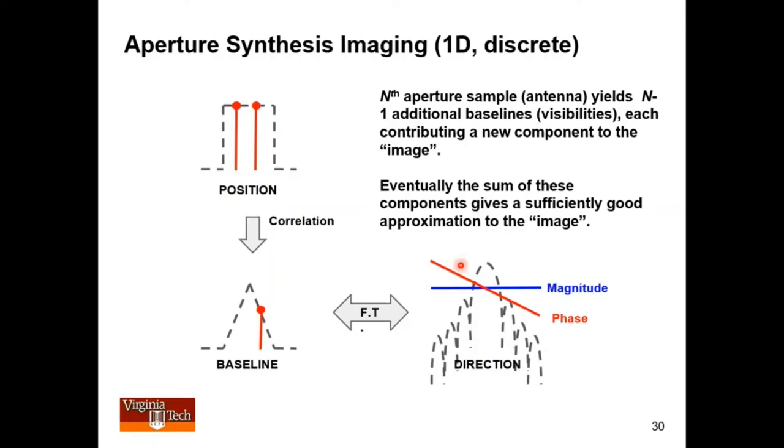So what aperture synthesis imaging is, and here's my 1D version of it, is you have, for example, two element interferometer. You have two samples in position. You get one unique baseline, and that might be measuring that location right there.